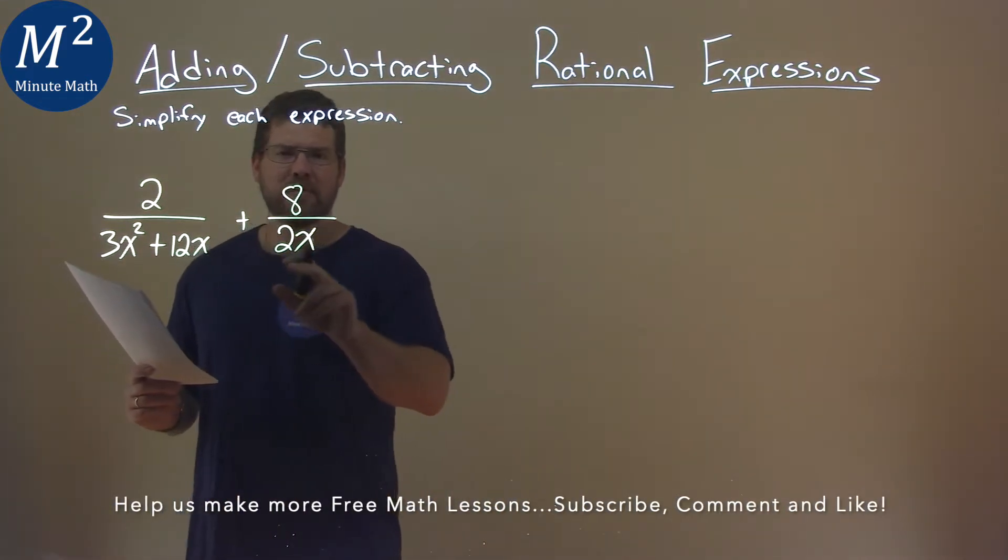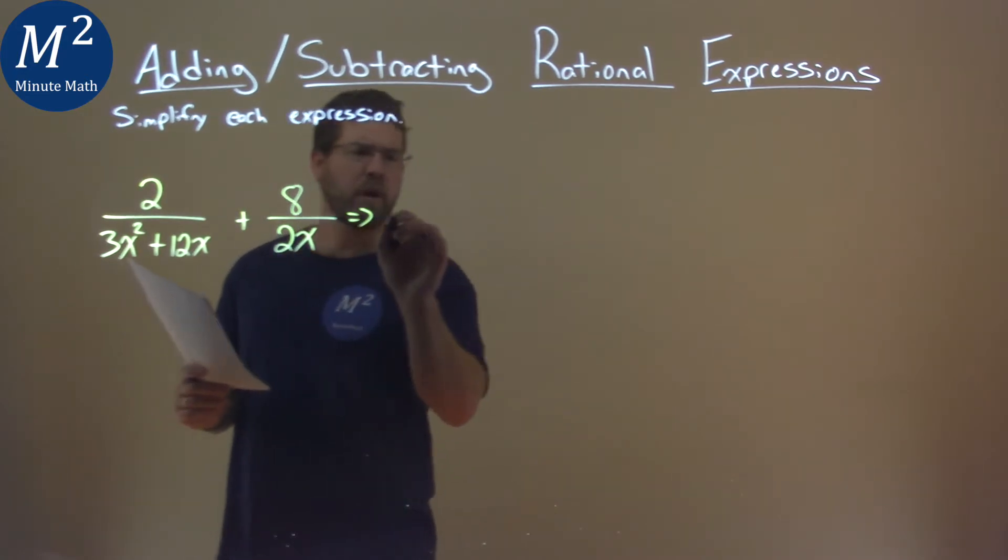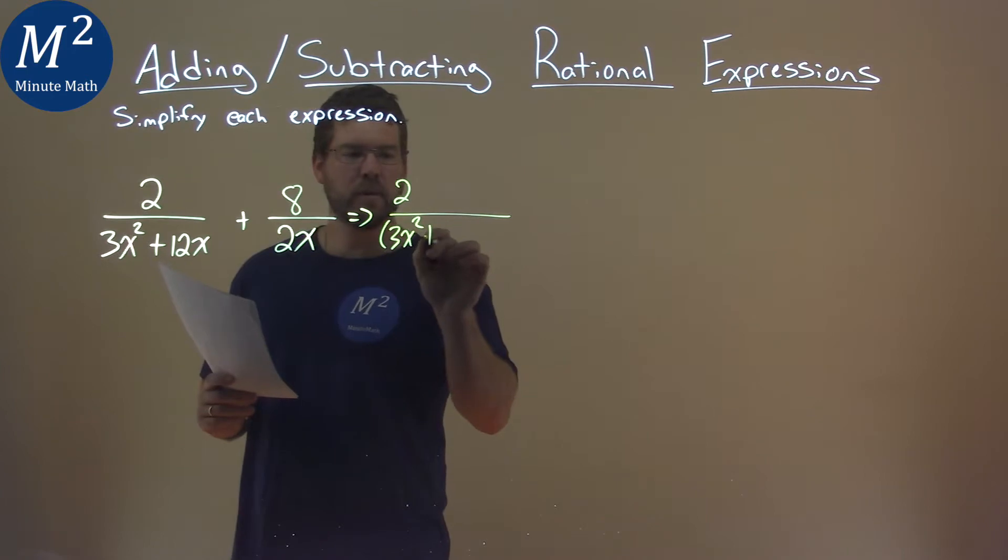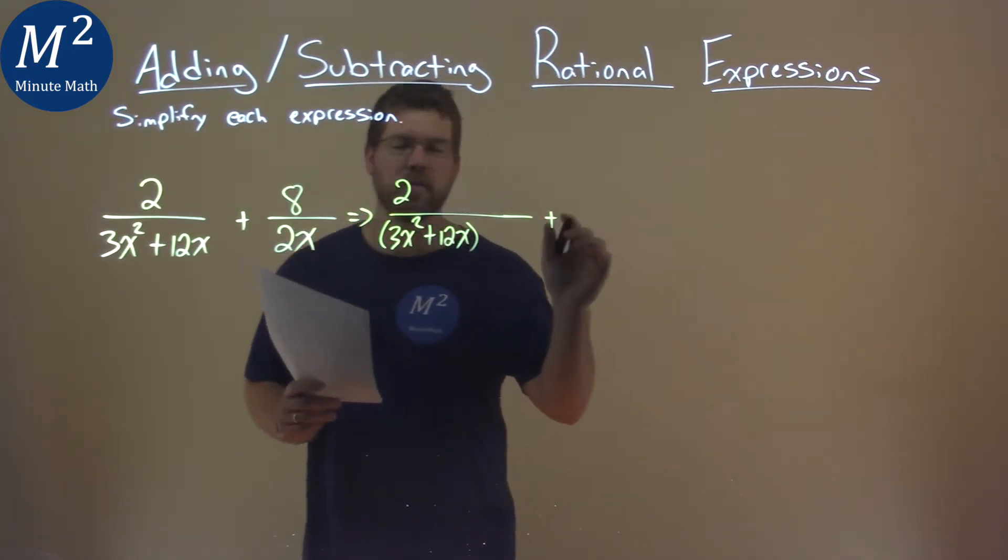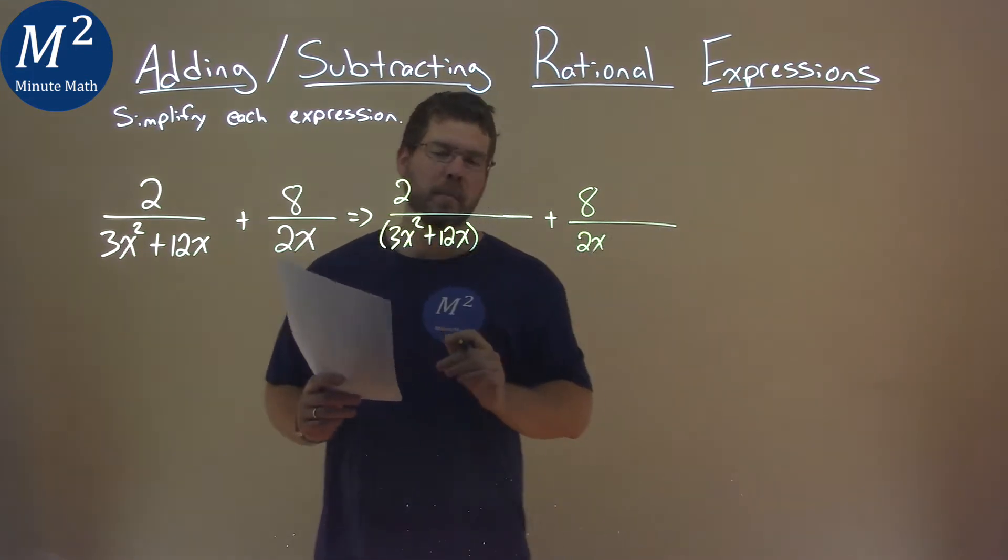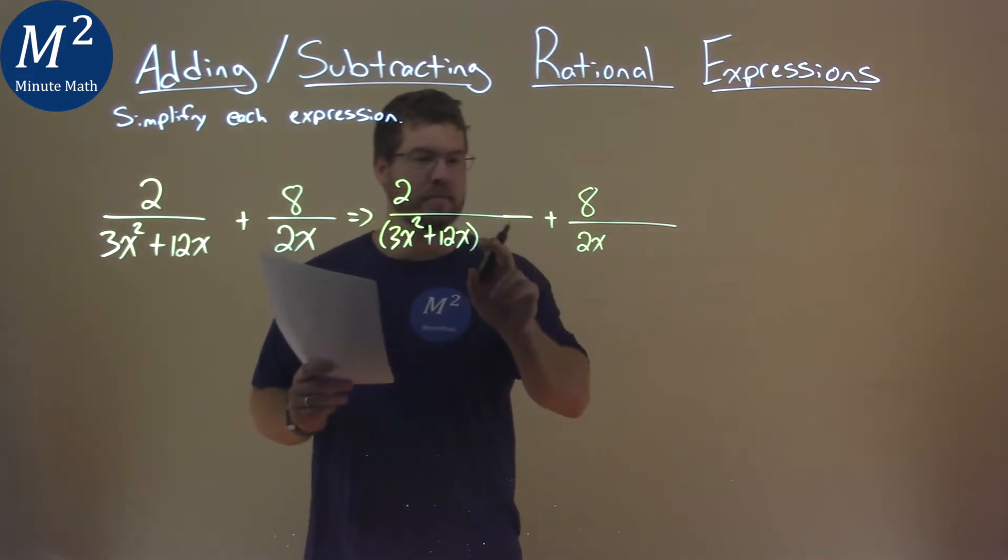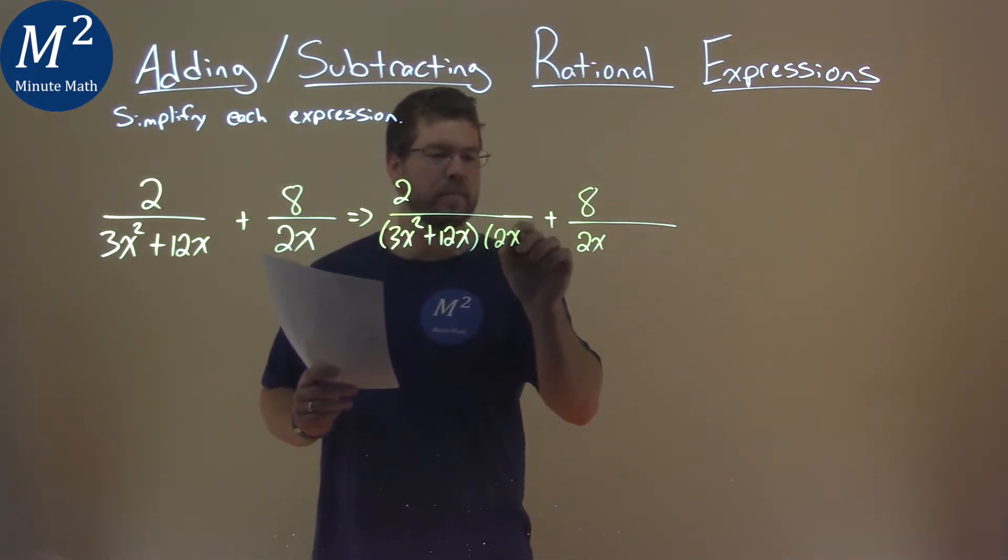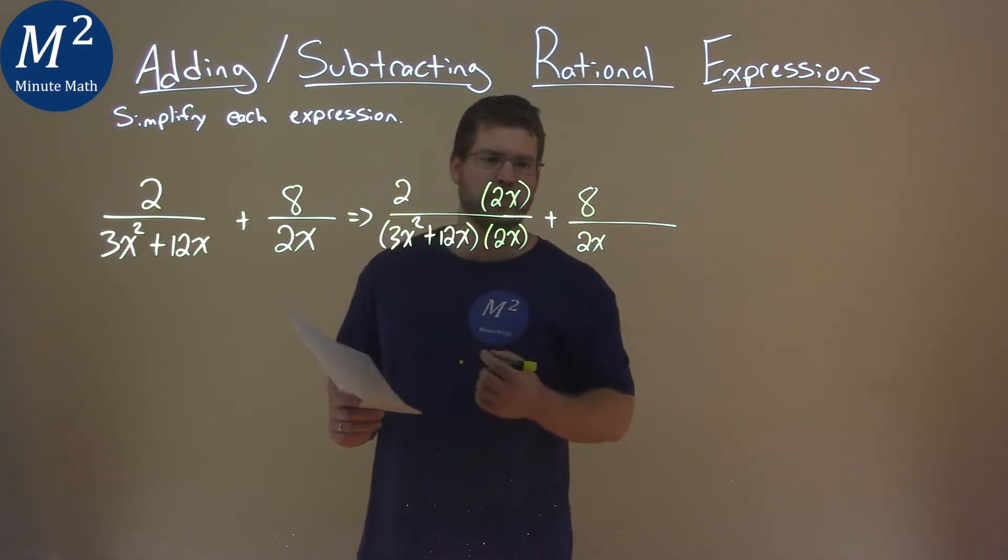I need to have the same denominator to combine them. So I'm going to rewrite this problem: 2 over 3x squared plus 12x plus 8 over 2x. But what I'm going to do is take this denominator of 2x and multiply it to this side, 2x over 2x, because 2x over 2x is 1, it doesn't really change it.